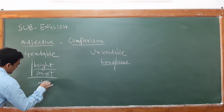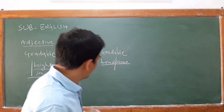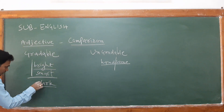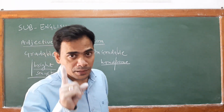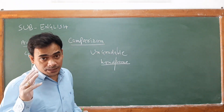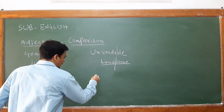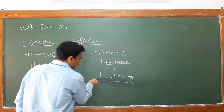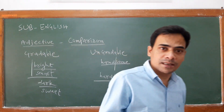For example, 'dark' consists of only one single syllable, so it becomes: dark, darker, darkest — you go with '-er' and '-est.' Another example: 'sweet' also has only one syllable, so: sweet, sweeter, sweetest. However, 'hardworking' has more than one syllable, so it becomes 'more hardworking' and 'most hardworking' — like an ungradable adjective.